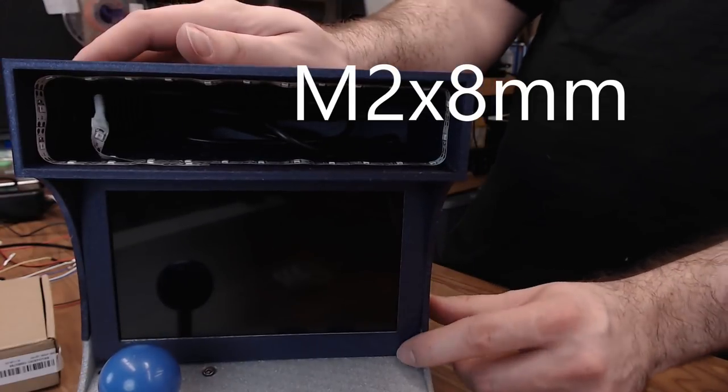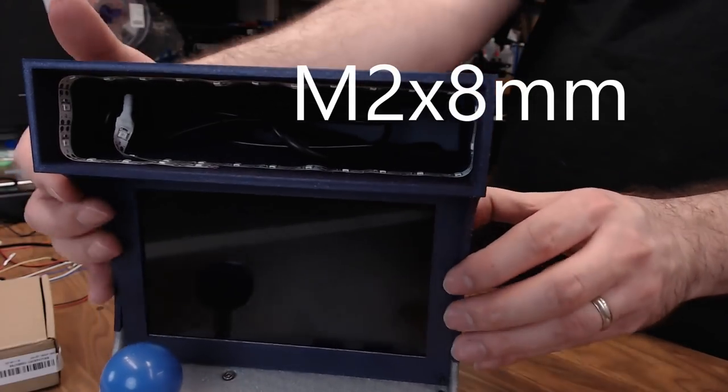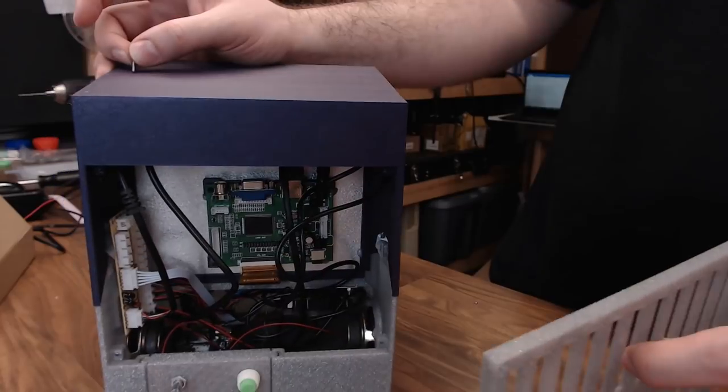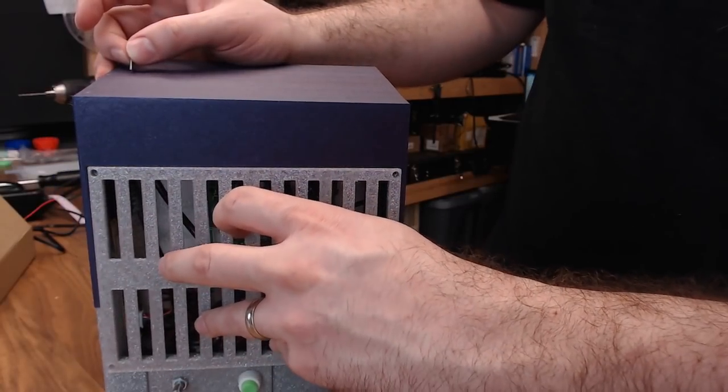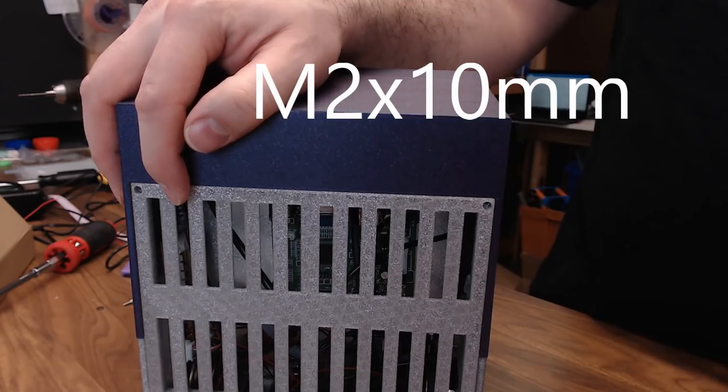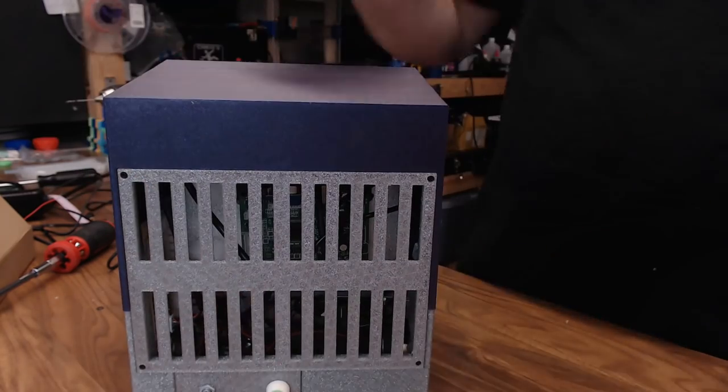And then I use four M2 by 8mm screws to snug the screen bezel down. Then we can put a back cover on, just like this. I'm going to use some 2mm by 10mm screws. Got that on there.